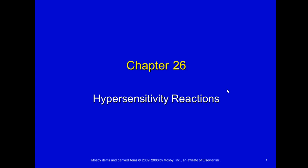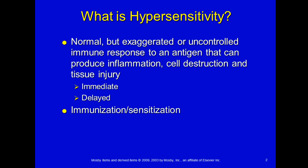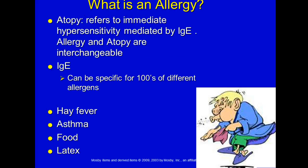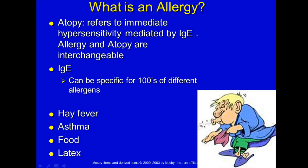This is the section on hypersensitivity reactions. Hypersensitivity is a normal but exaggerated or uncontrolled immune response to an antigen that can produce inflammation, destroy cells, or cause tissue injury. This can happen right away — called an immediate reaction — or it can be delayed. Usually it involves some type of immunization or sensitization response.